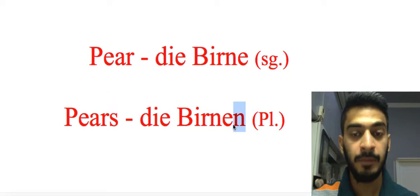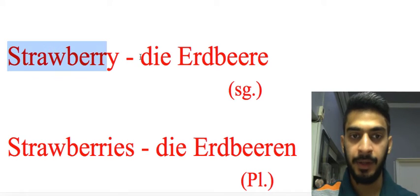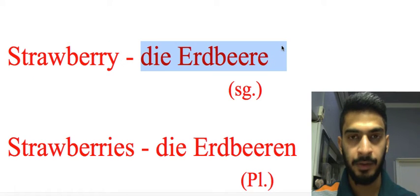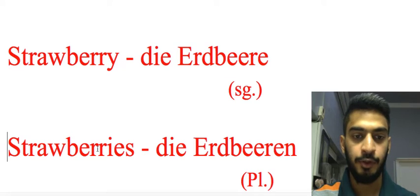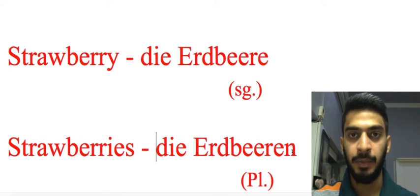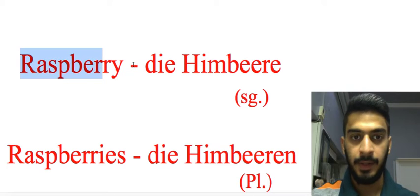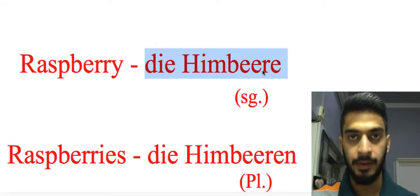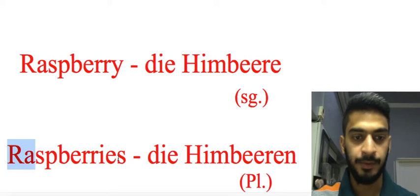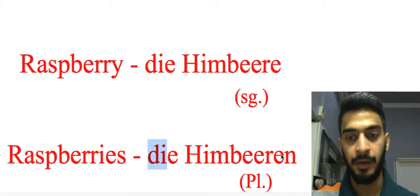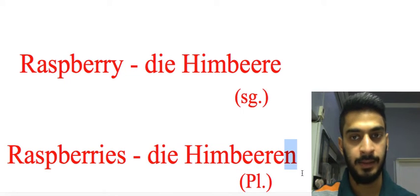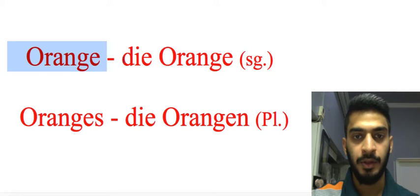Strawberry — 'die Erdbeere' singular form, strawberries — 'die Erdbeeren' plural form — again the same process, we have extra 'n' at the last position. Raspberry — 'die Himbeere' singular form, raspberries — 'die Himbeeren' plural form — extra 'n' at the last.